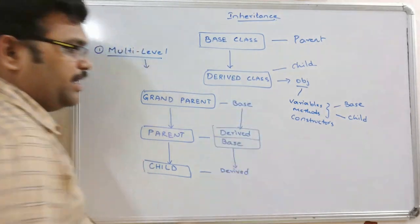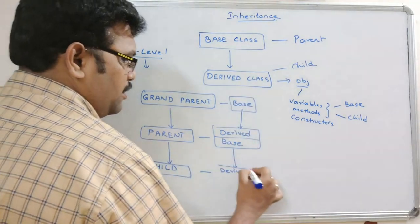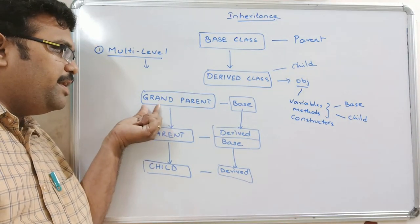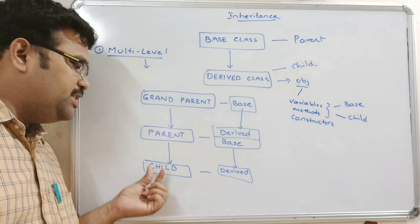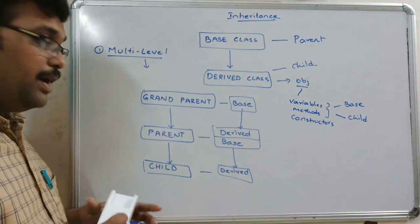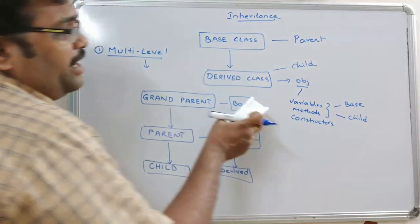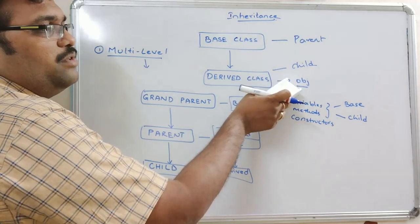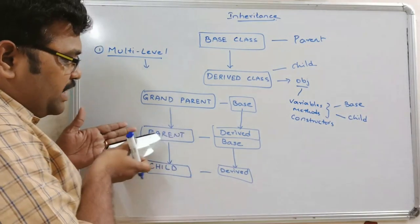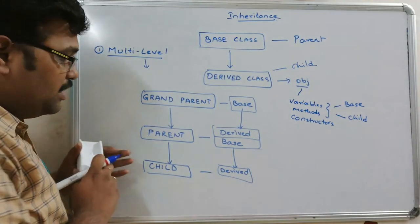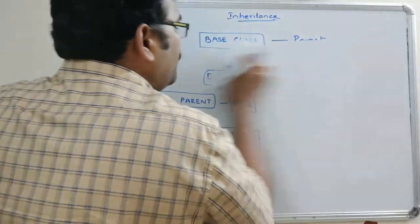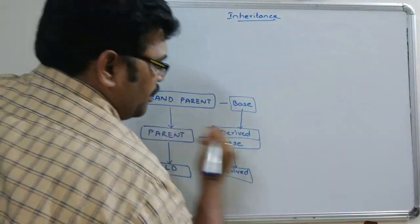So parent will acquire the properties of grandparent, and child will acquire the properties of parent. Parent will be the base class for child, and grandparent will be the base class for parent. In single inheritance, the derived class object can access the variables, methods, and constructors of both the base class and the derived class.